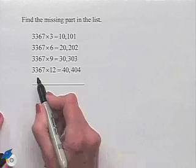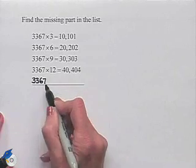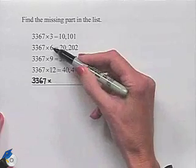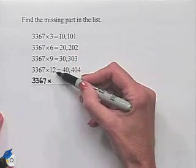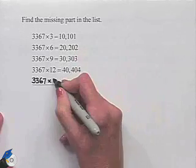Well, we notice that the 3,367 remains the same in our pattern. We're multiplying, and each time we're multiplying times a multiple of 3. We have 3, 6, 9, 12. The next would be 15.